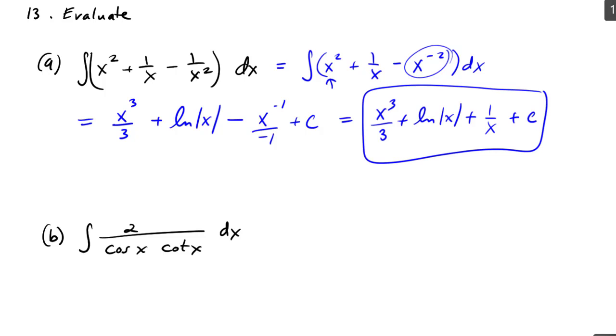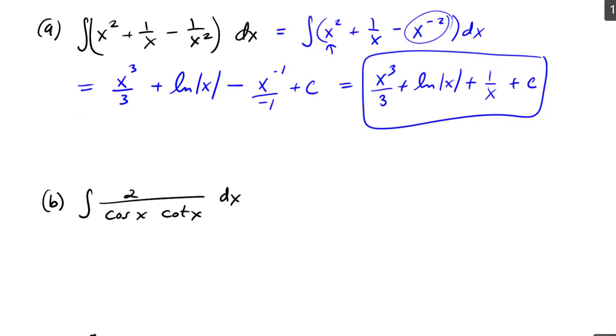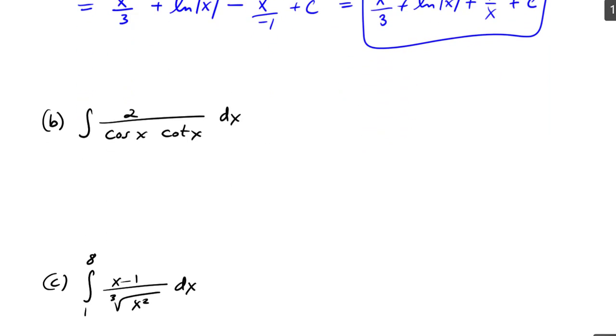Okay, another indefinite integral, but the problem is I don't see this as the derivative of anything, so I have to play around a little bit. I have the integral of 2, and then I have a 1 over cosine x and then a 1 over cotangent x dx, but that's the integral of 2